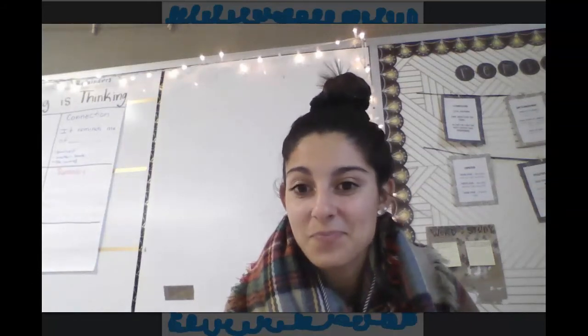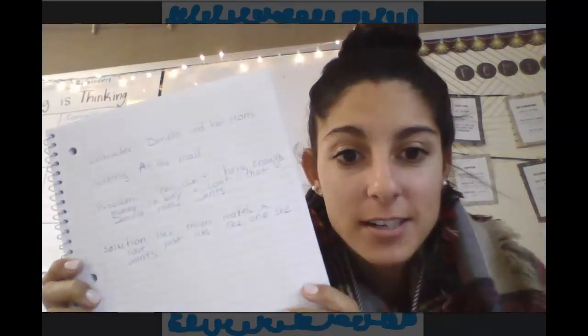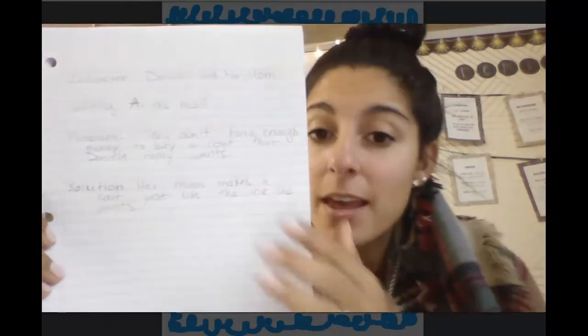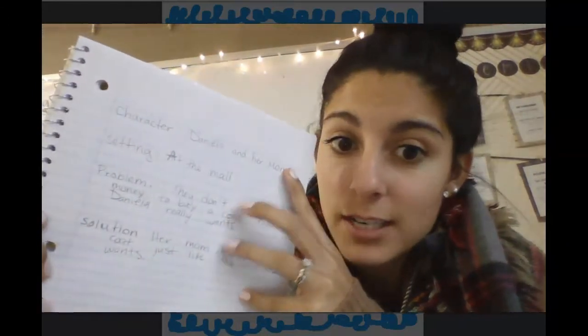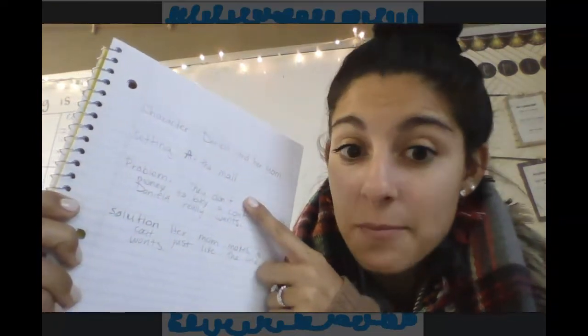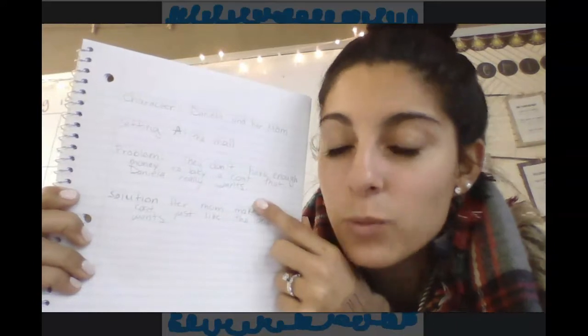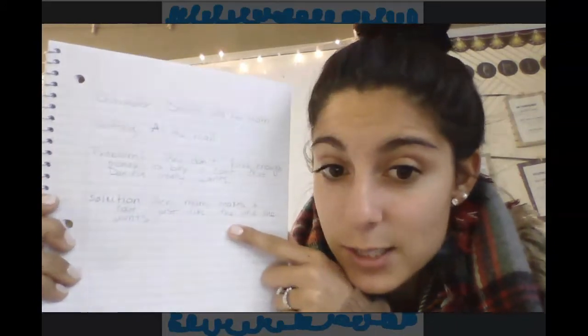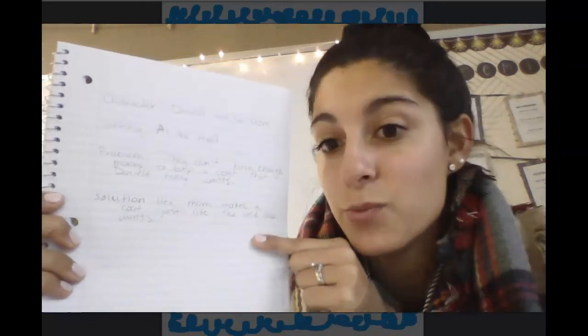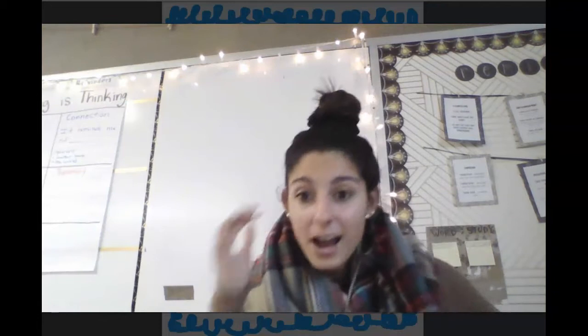Hi writers! Yesterday you guys came up with a character, a setting, a problem, and a solution. For example, my character is Daniela and her mom, the setting is at the mall, the problem is that they don't have enough money to buy a coat that Daniela really wants, and the solution is her mom makes a coat just like the one she wants.